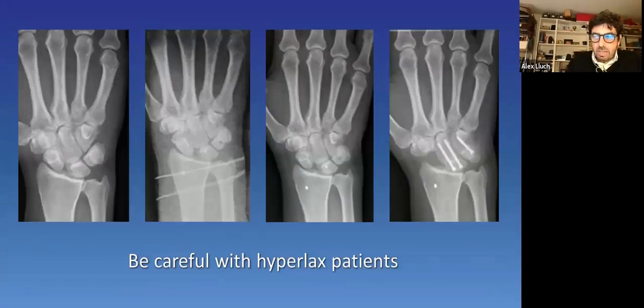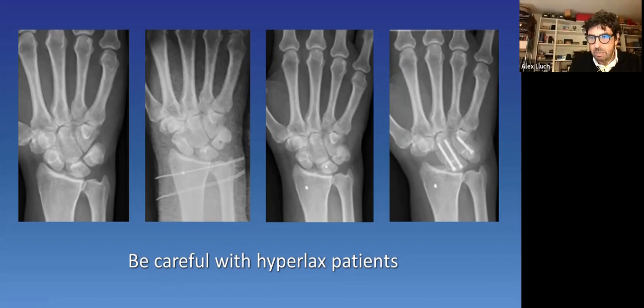The second thing that we learned is treating hyperlax patients carefully. Usually, they don't behave exactly the same as the rest of the patients, and soft tissue reconstructions may work not so well. This is a patient of mine. He had a complete, easily reducible lesion. We performed a spiral reconstruction, but even doing that, very soon, the wrist collapsed. It was symptomatic and ended with a partial fusion. And he's doing well right now, but it's been like two years or something like that with a painful wrist.